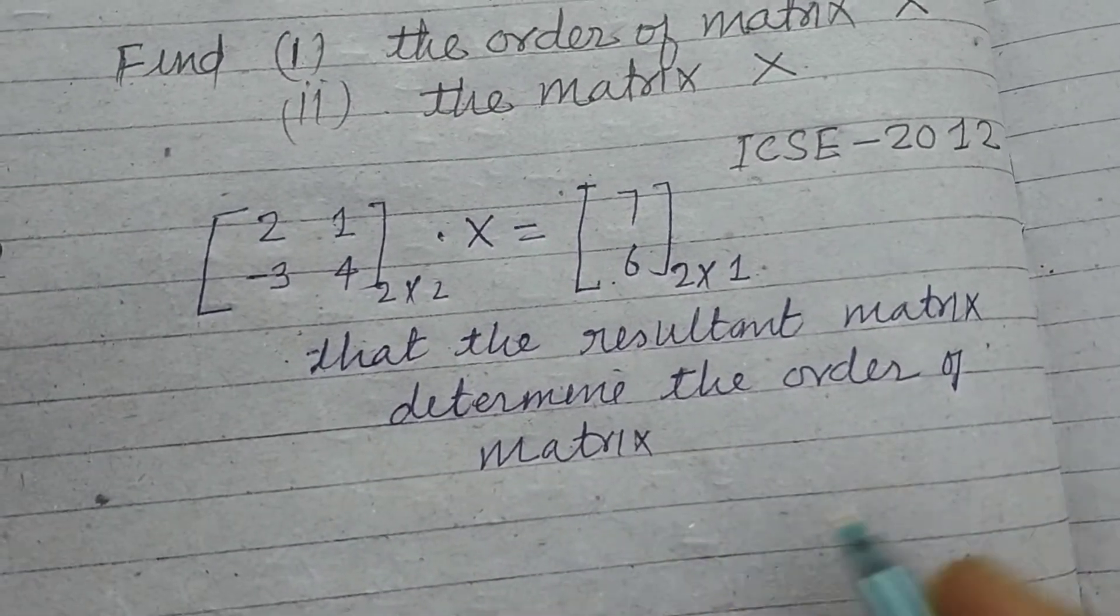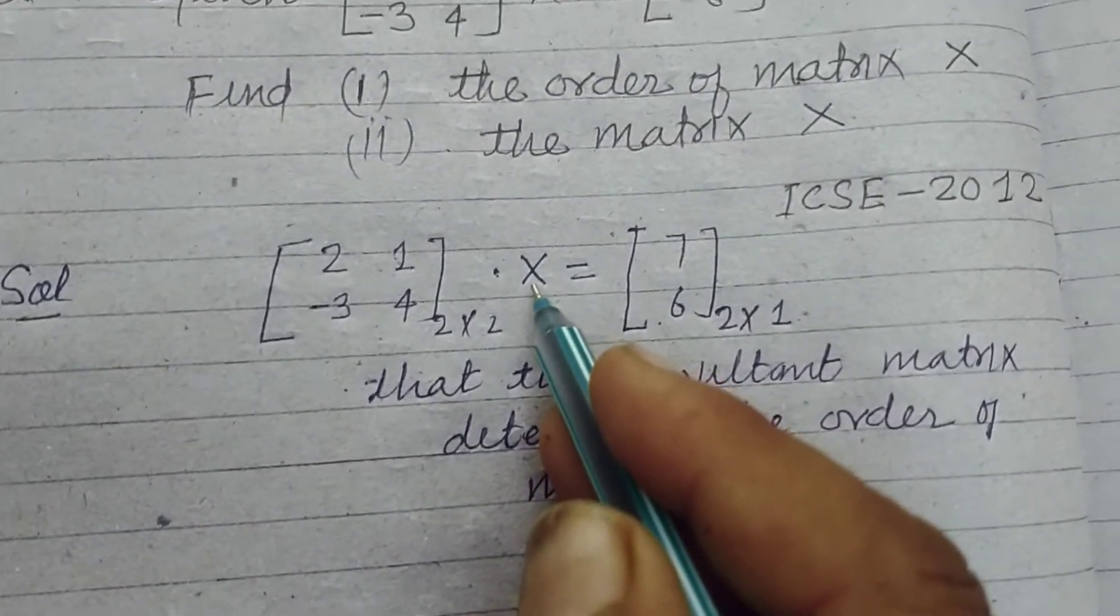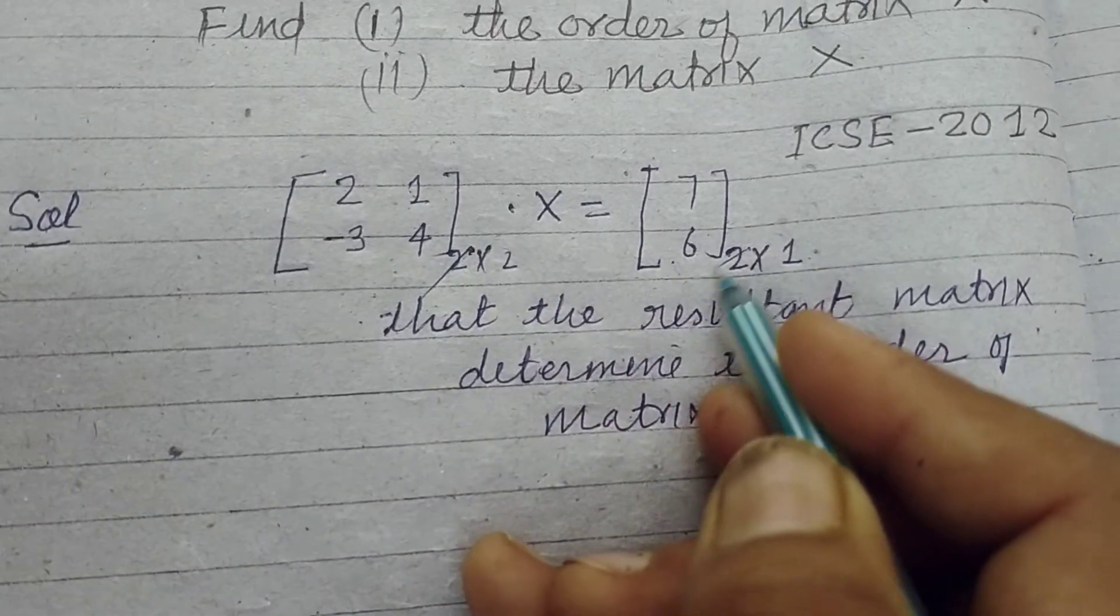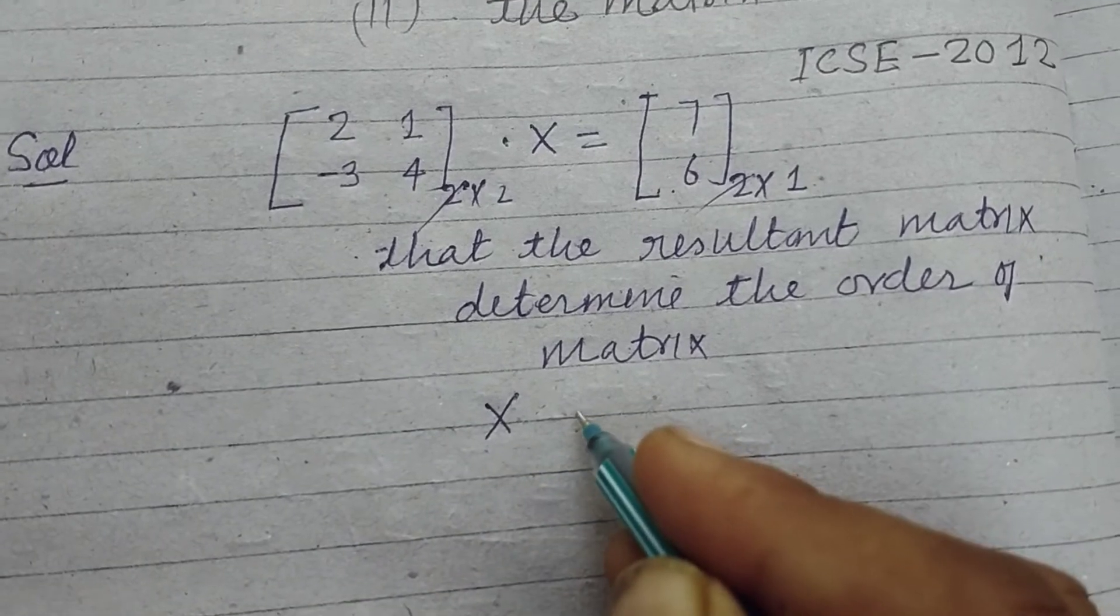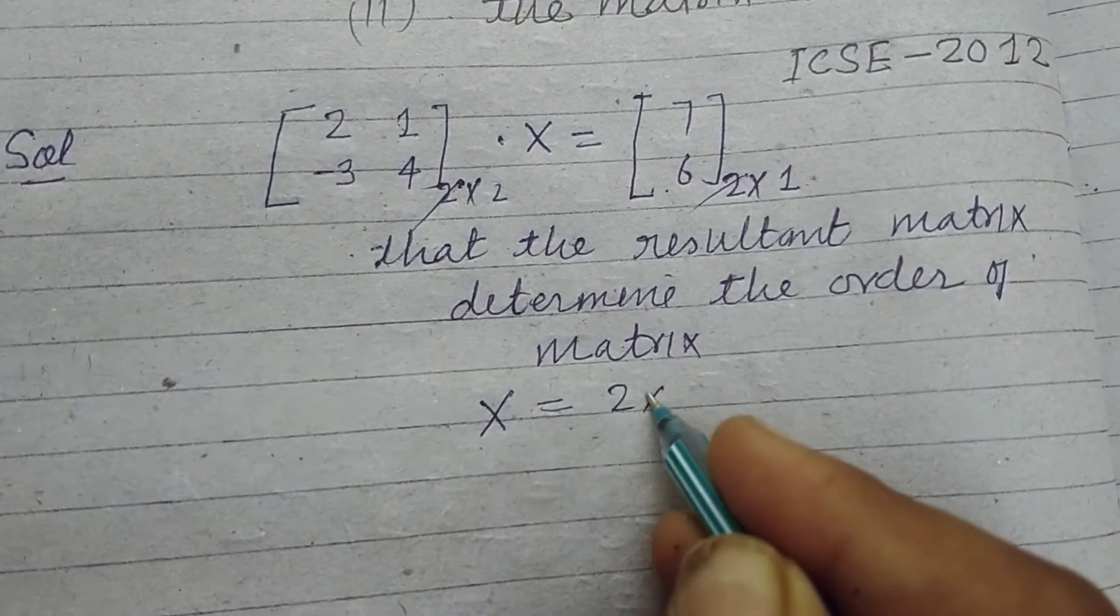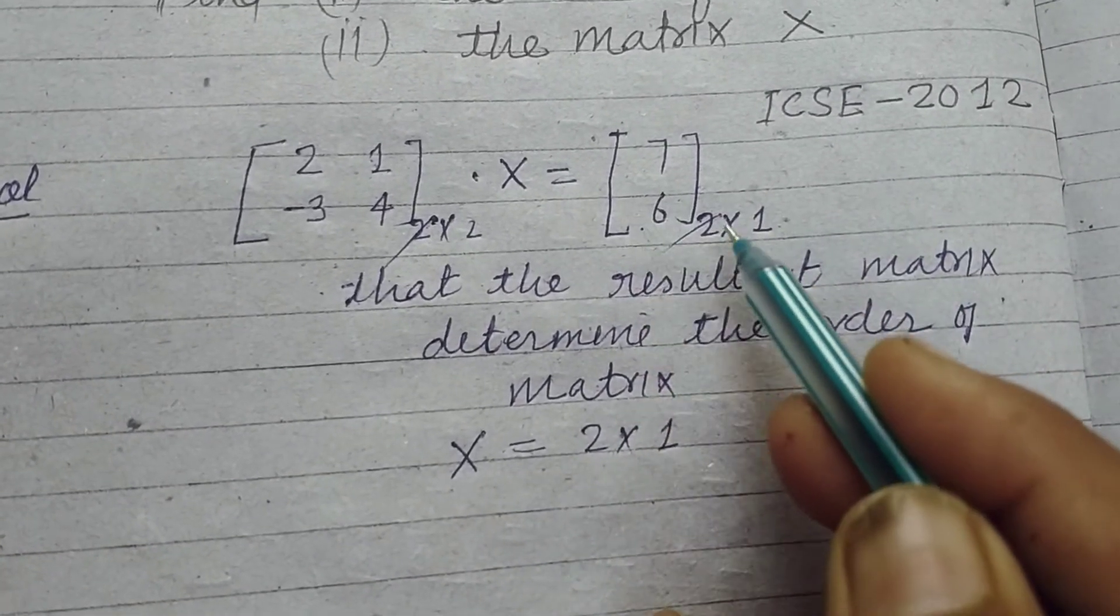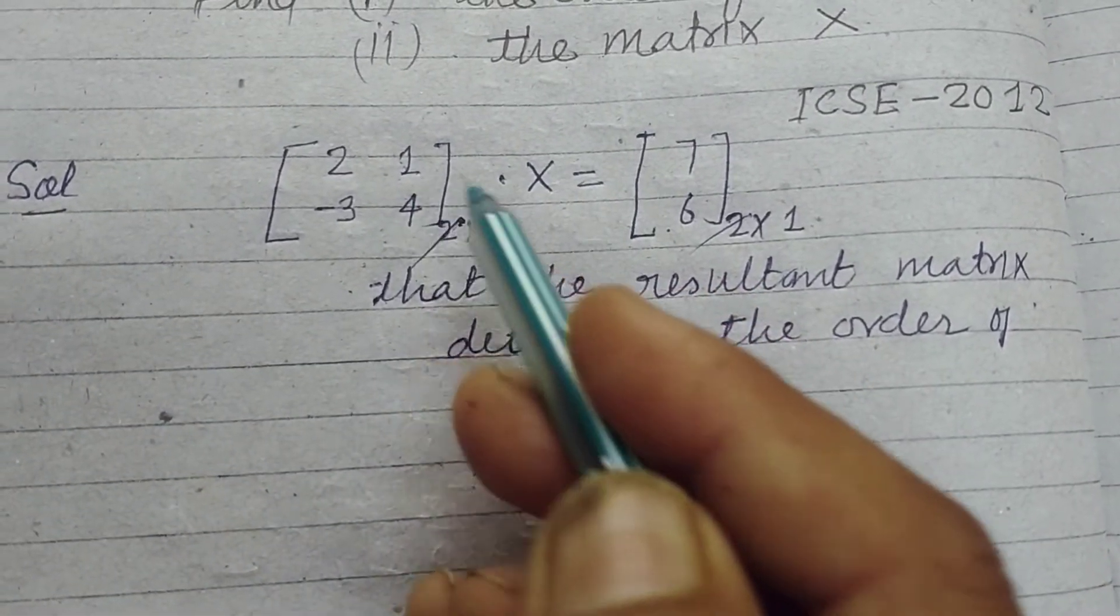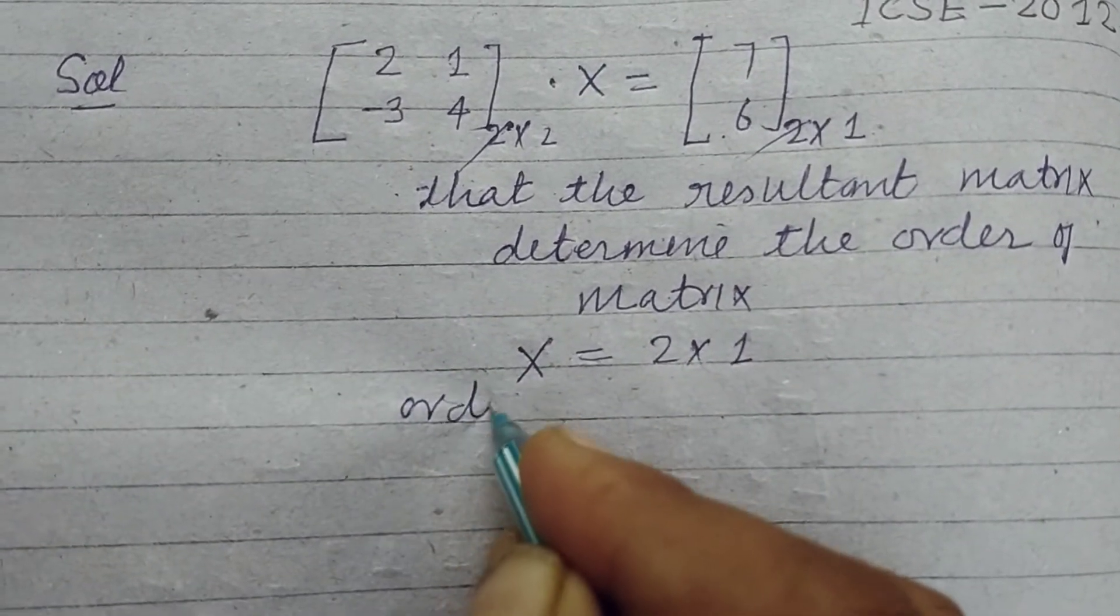The order of X: when we cross this to this, the order of matrix X is order 2 by 1. So the same order - the order of the resultant matrix is the order of the unknown matrix when it's multiplied by a given matrix. So order of X is 2 into 1, 2 by 1, two rows one column.